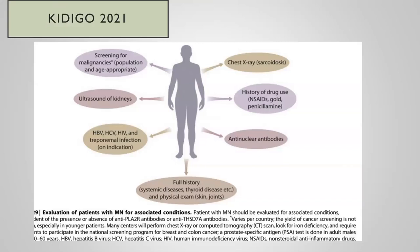The secondary cause workup covers a patient from head to toes — a chest X-ray to exclude sarcoid, full virology screen, malignancy screen, and a thorough history, systematically going through all secondary causes of membranous GN.